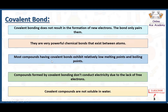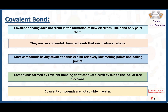Most compounds having covalent bonds exhibit relatively low melting points and boiling points. They are comparing covalent bonds with ionic bonds — ionic bonds are strong because they have ions, cations and anions. But as compared to ionic bonds, covalent bonds are not that strong, so their melting points and boiling points are relatively lower than ionic compounds. Compounds formed by covalent bonding don't conduct electricity due to the lack of free electrons. These compounds don't have cations and anions, so there are no ions, meaning they are unable to conduct electricity.